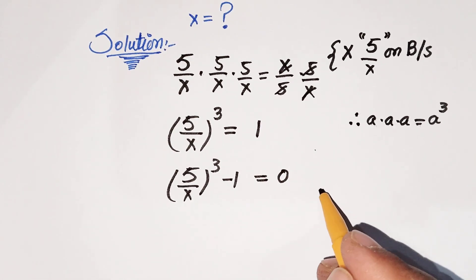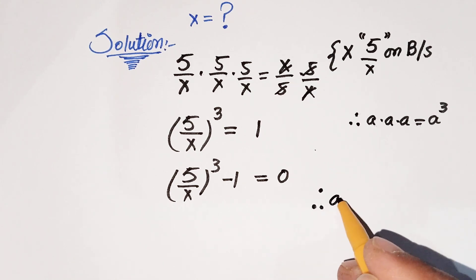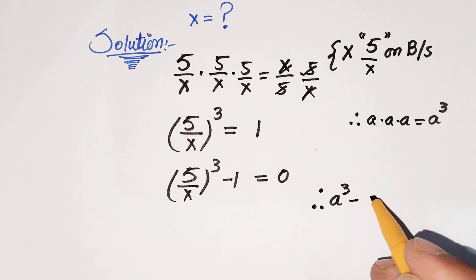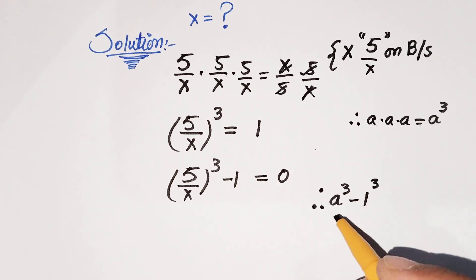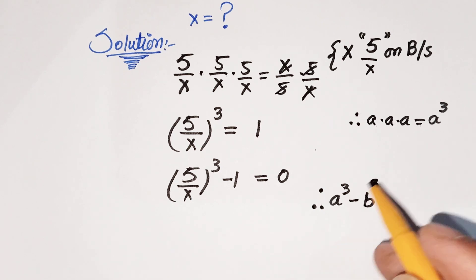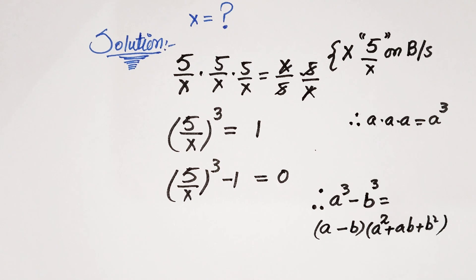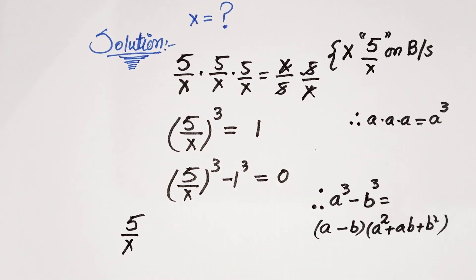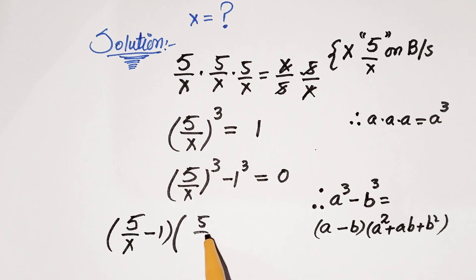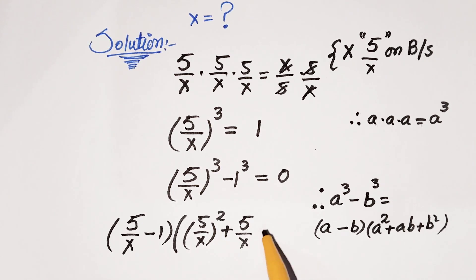Now we use the basic algebra formula: a cubed minus b cubed equals (a minus b)(a squared plus ab plus b squared). Here 1 is actually 1 cubed. So we write (5/x minus 1) times (5/x whole squared plus 1 times 5/x plus 1 squared) equals 0.